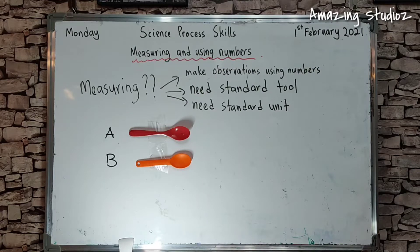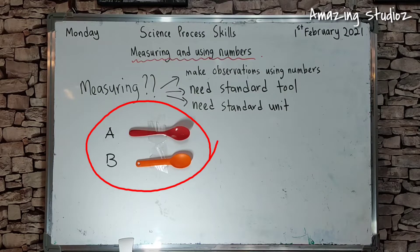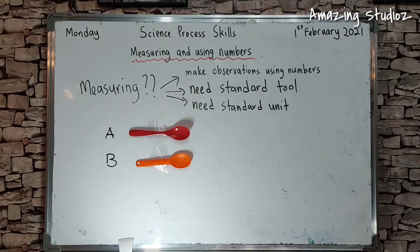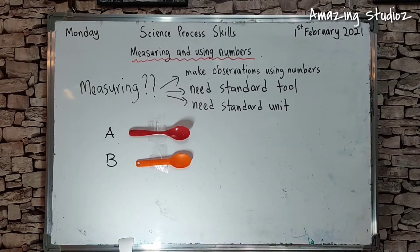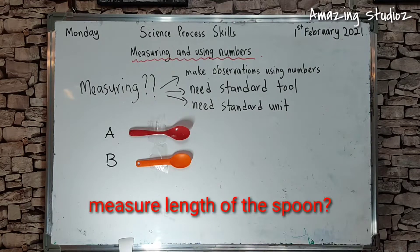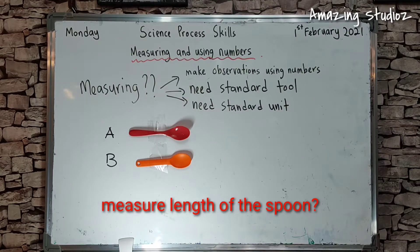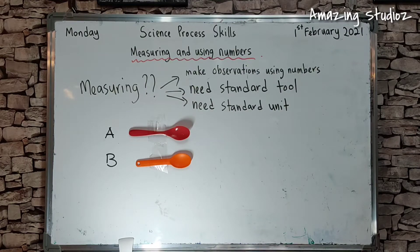Look at the spoons I placed on the whiteboard. There is a red spoon and an orange spoon. Which spoon is longer — the red one or the orange one? The red is longer. We need to measure it by using some tools. How do we measure the length of the spoon using a tool? What are the correct tools we need to use? Let's find out.